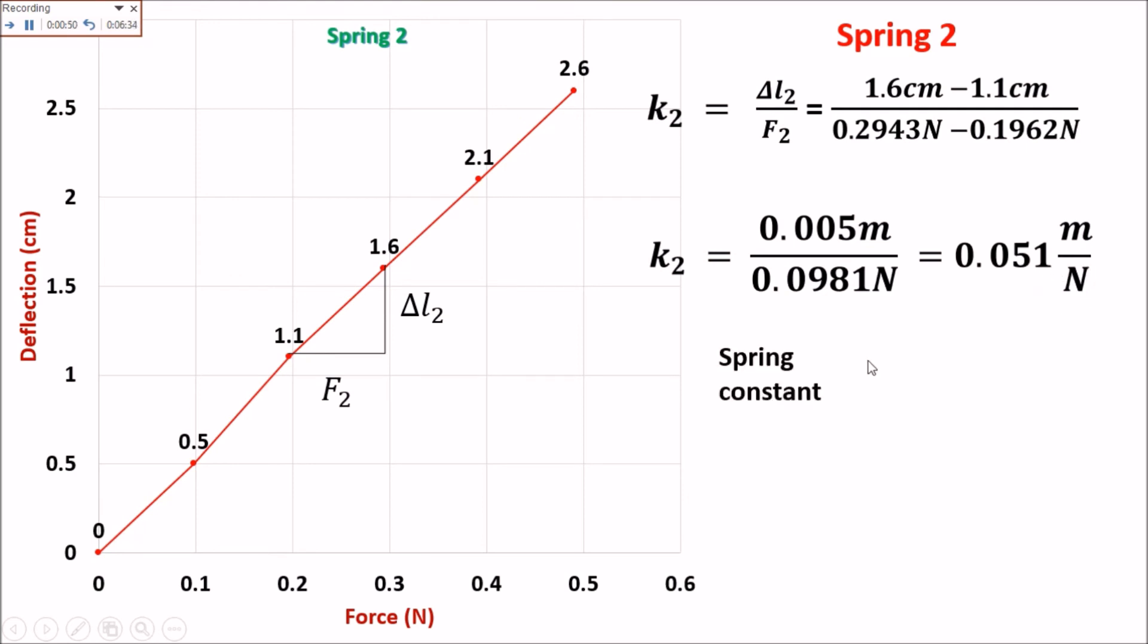To get the spring constant, we will get the reciprocal. The reciprocal, that is 1 divided by 0.051 meter per newton. Then, the spring constant is equal to 19.6 newton per meter.